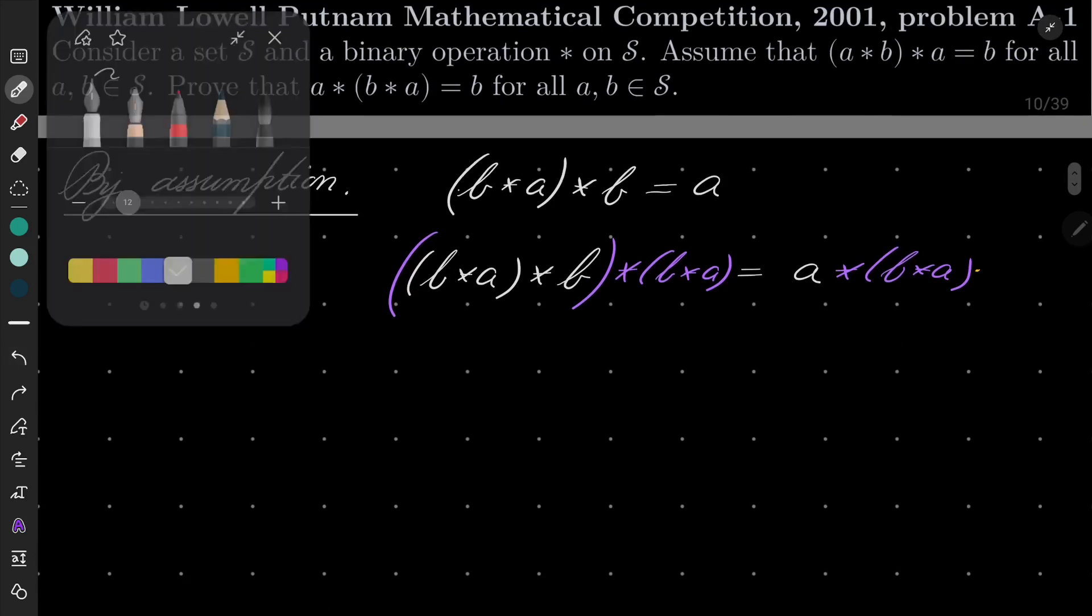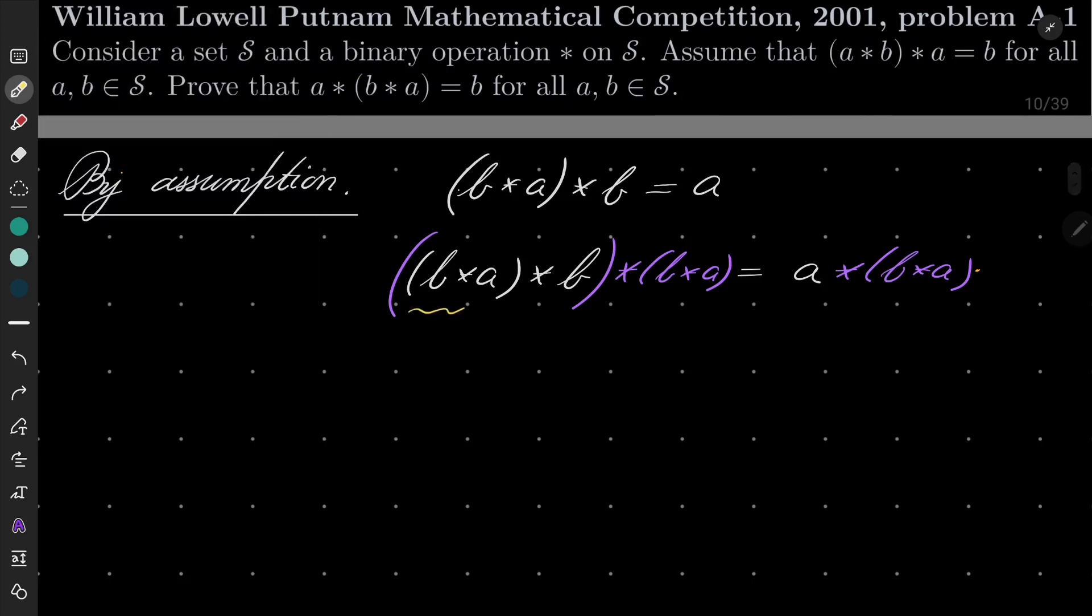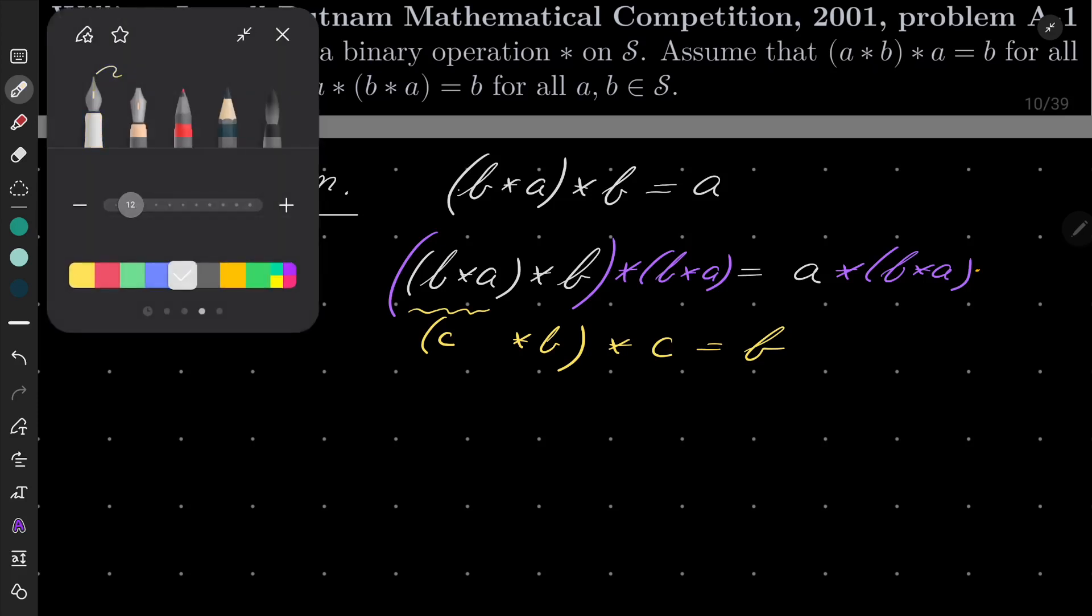Well on the left-hand side, take notice, we have something of the form c star b star c. Again, by our assumption, once again, first we have parentheses, then star. By assumption, this is just b. And to be honest, that's it.